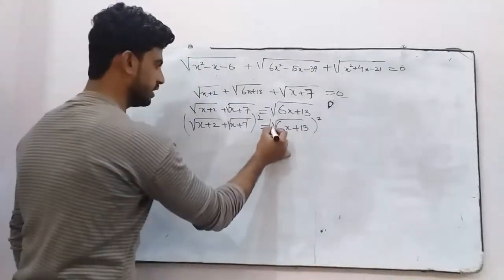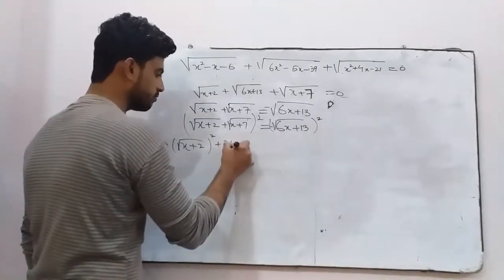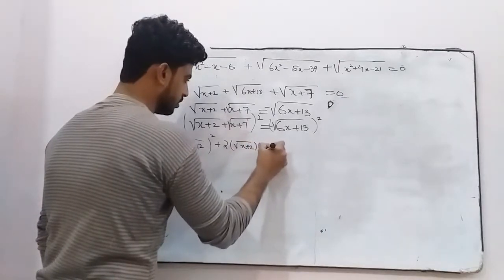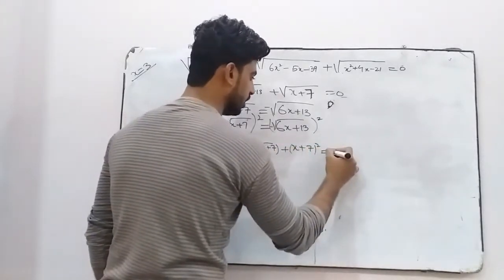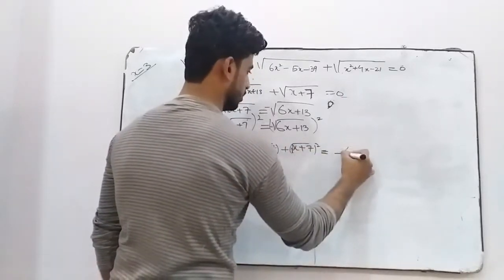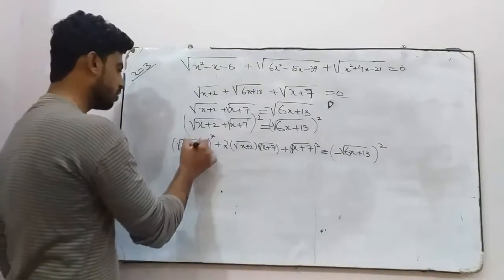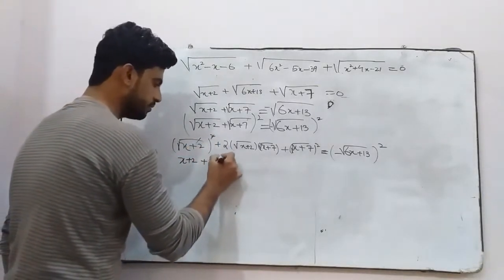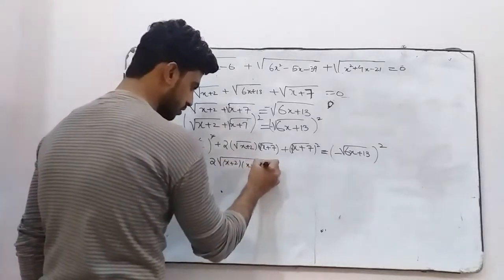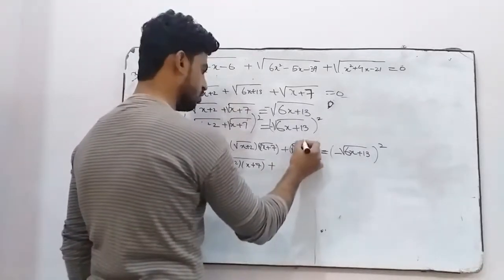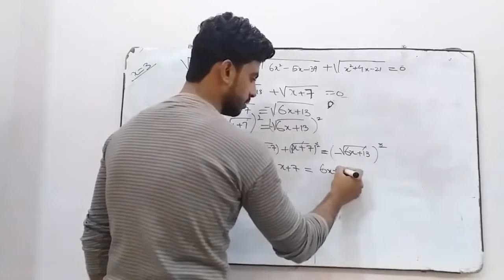We square both sides. Using the (a plus b)² formula: first squared, plus 2 times first times second, plus second squared equals the right side squared. Squaring cancels the square roots, leaving x plus 2, plus 2 times square root[(x plus 2)(x plus 7)], plus x plus 7, equals 6x plus 13.